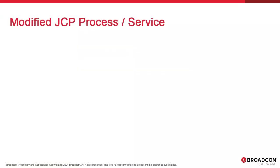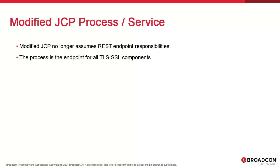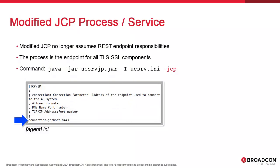Some of the AE processes have evolved. Prior to version 21, the JCP served primarily as an endpoint to the REST API — that's no longer the case. The implementation of TLS-SSL meant Atomic needed an endpoint for TLS components, namely Windows and UNIX agents and Java-based components. That's now the JCP, and this is reflected in the start commands. We're still relying on the UCSRVJP JAR file. Prior to version 21, JCP took the DASH REST extension; that extension is now DASH JCP. This is also reflected in the TLS-SSL agent INI files — TLS components no longer connect to the CP host; they point to JCP instead, with the secure WebSocket port defaulting to 8443.